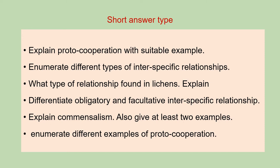Next is: differentiate obligatory and facultative inter-specific relationship. Next is: explain commensalism and also give at least two examples. And the last question of this category is: enumerate different examples of proto-cooperation.